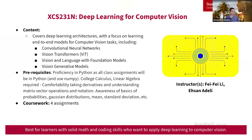Next we'll be going over XCS 231N, Deep Learning for Computer Vision. This course covers deep learning architectures with a focus on learning end-to-end computer vision models. You'll be going over CNNs, ViTs, vision and language models, and multimodal models. Proficiency in Python along with some linear algebra and calculus is encouraged, and awareness of probability and notation is also important. This course has four assignments and is best for learners with solid math and coding skills who want a general overview of what exists in the computer vision field.